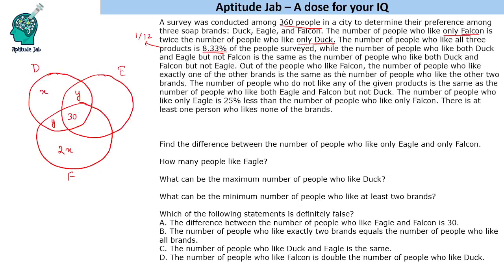Next, out of the people who like Falcon, the number of people who like exactly one of the other brands is the same as the number of people who like the other two brands. Let us put the Duck-and-Falcon-but-not-Eagle region as Z. So exactly one other brand gives Y plus Z, and this equals the people liking the other two brands, which is 30. So Y plus Z equals 30.